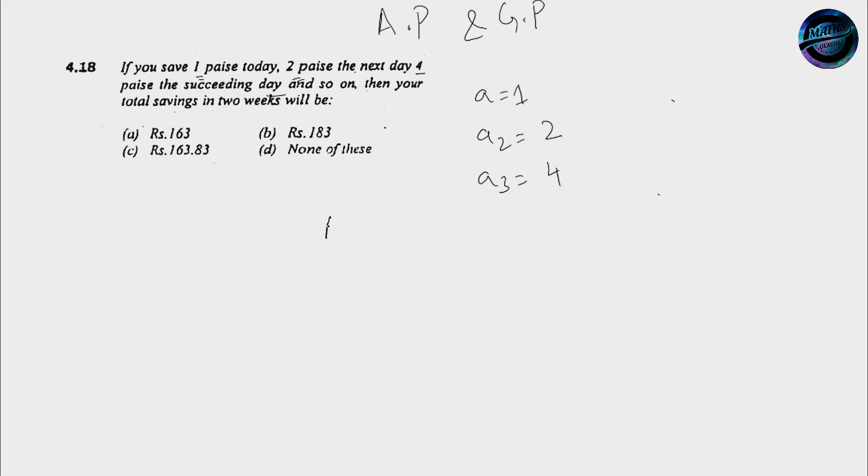If you remember in AP the sums between the addition between the terms is the same, right? Because a fixed quantity or fixed constant is being added. From A1 to A2 we are adding 1. Similarly if we would have added 1 over here, then it would be an arithmetic progression AP. But we have not, we have added 2 so it's not AP.